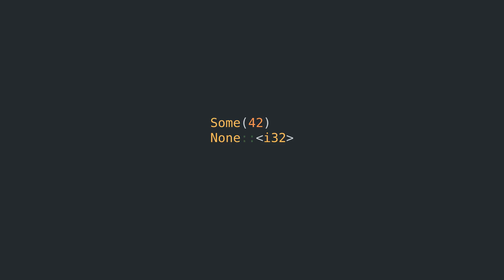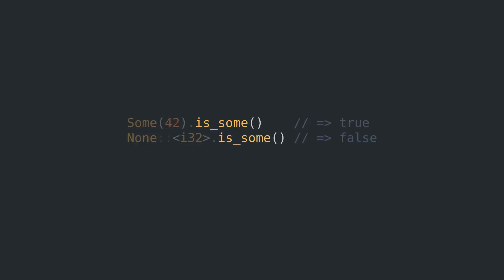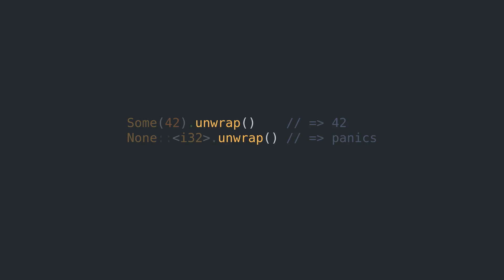You probably know that you can call is_some to find out whether the option is the Some variant, and same with is_none. But did you know that you can simply call unwrap on an option to get to its contained value?